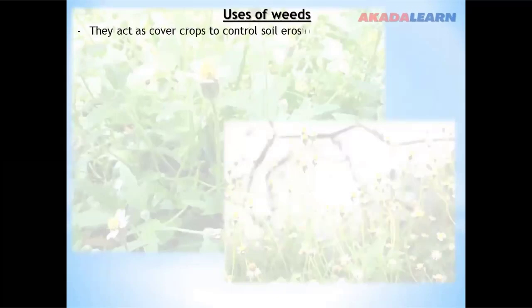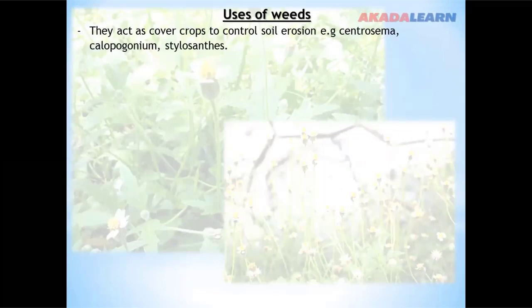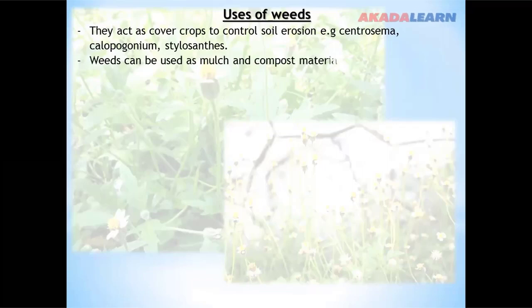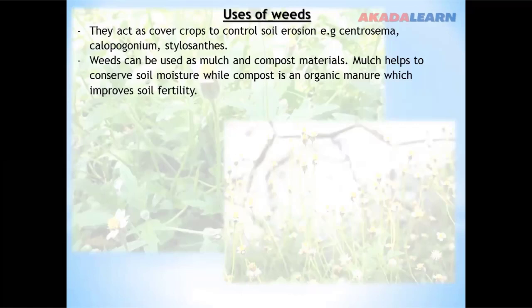Weeds act as cover crops to control soil erosion. Such weeds include centrosema, calopogonium, and hyalocentus. They spread out to cover the ground. Weeds can also be used as mulch and compost materials. Mulch helps to conserve soil moisture, while compost materials are organic manure which improve soil fertility.